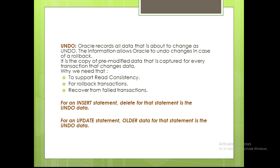So what is undo data? Oracle records all the data that is about to change as undo. This information allows Oracle to undo changes in case of a rollback. Undo is a copy of pre-modified data that is captured for every transaction that changes data. In the database, if we insert anything and want to undo it, we must remove that — so undo is the data which performs the previous action of the data.